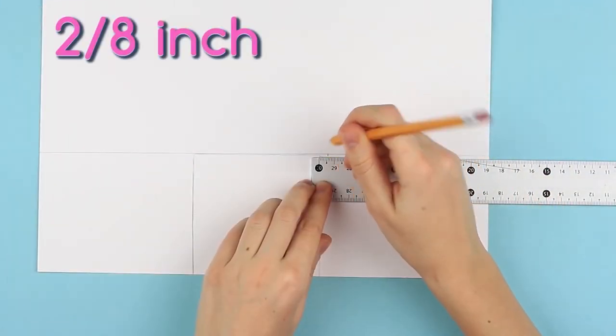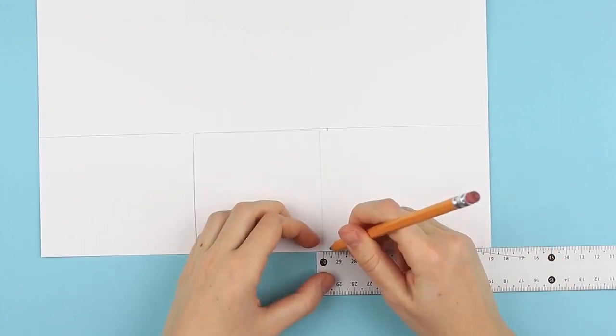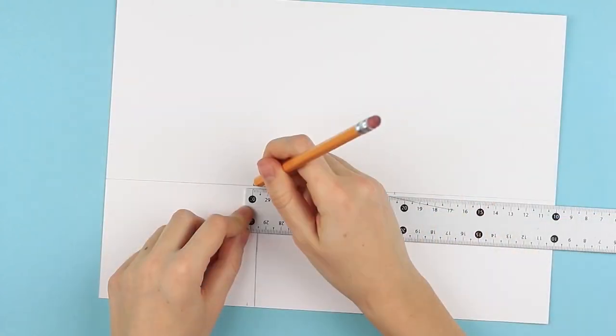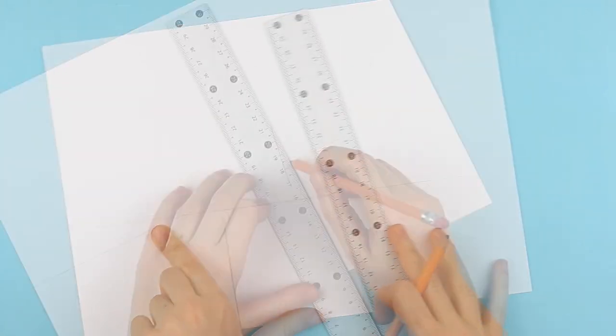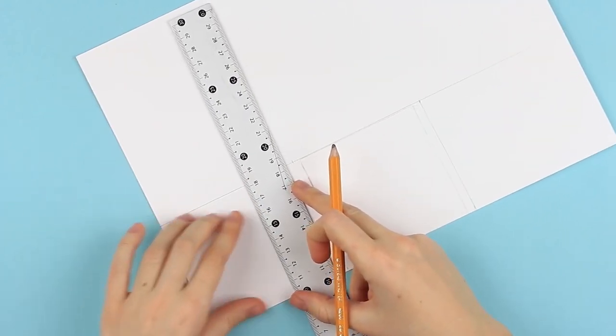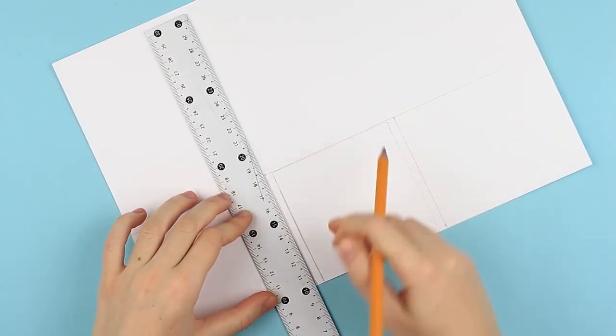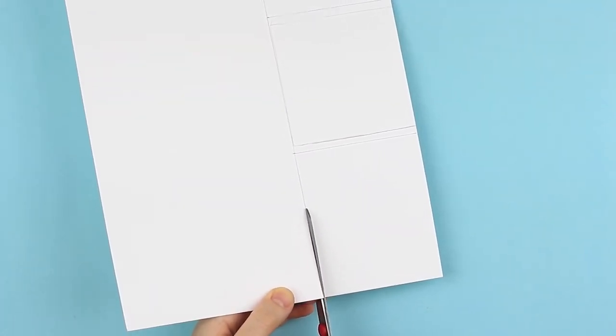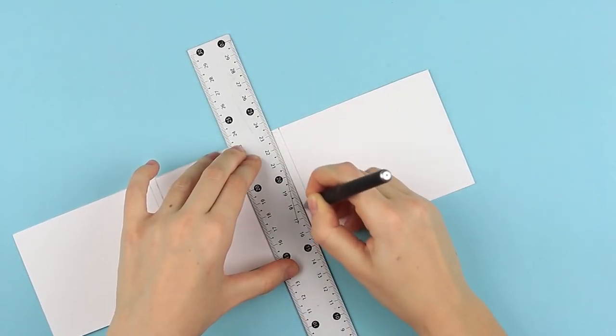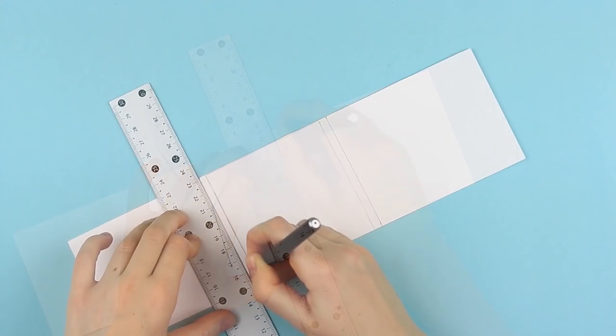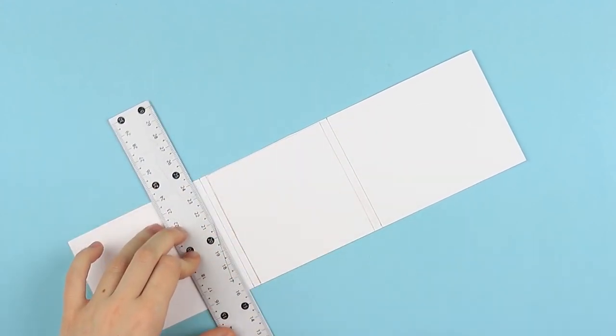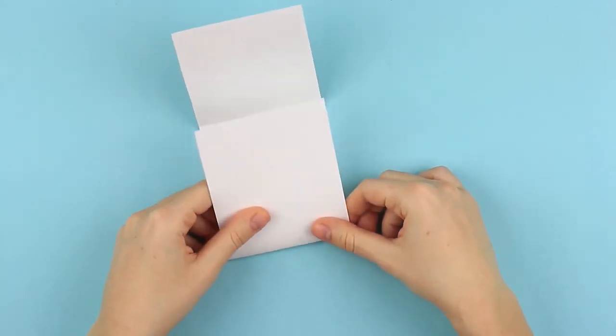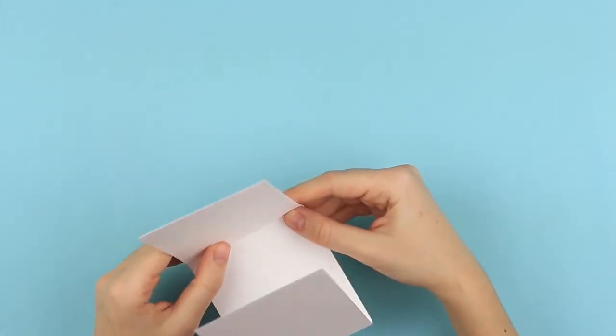Measure out 2 eighths of an inch beyond both sides of the central square on the top and the bottom. Join the marks. Cut out the wide strip. Put the ruler on the lines and score them with an empty ballpoint pen. Fold the scrapbook. The cover is nearly ready.